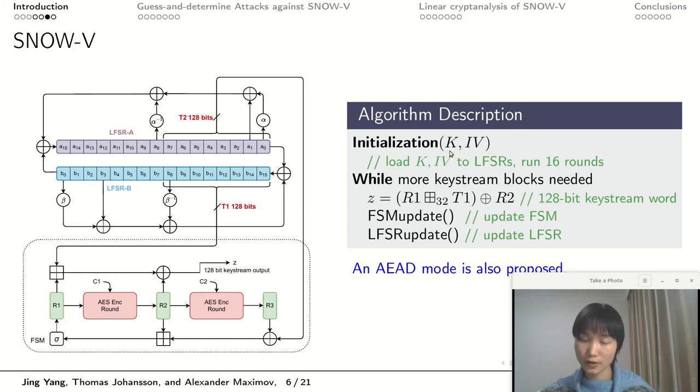When we use SNOW-V to encrypt data, we need to first perform the initialization phase. During this phase, the cipher loads the key and IV to the LFSR, then runs the cipher for 16 rounds without giving any output. After that, the cipher starts to produce keystream words. In each iteration, it first outputs a 128-bit keystream word, then updates the FSM part, then updates the LFSR part, and enters the next iteration until all data is encrypted. We also proposed an AEAD mode to provide authentication for the data.